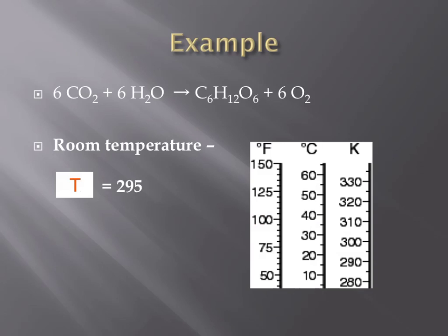The first and easiest variable that we will define is temperature. Room temperature is about 72 degrees Fahrenheit or 22 degrees Celsius, or most importantly for our purposes, 295 degrees Kelvin. Since this chemical reaction will be occurring at about room temperature, we will use 295 degrees Kelvin as our temperature.